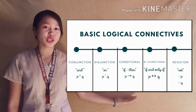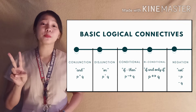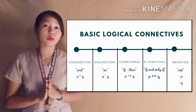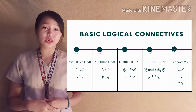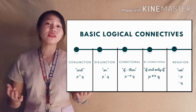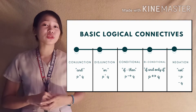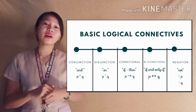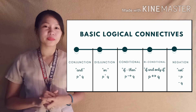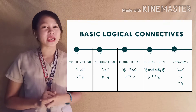Here are the basic logical connectives: conjunction, disjunction, conditional, biconditional, and negation. If two simple propositions P and Q are joined with the word AND, the result is called a conjunction. If the connecting word is OR, the result is a disjunction. If it is in an if-then form, the result is called conditional. If it is in if-and-only-if form, it is called biconditional. And if there is the presence of the word NOT, then it is a negation.